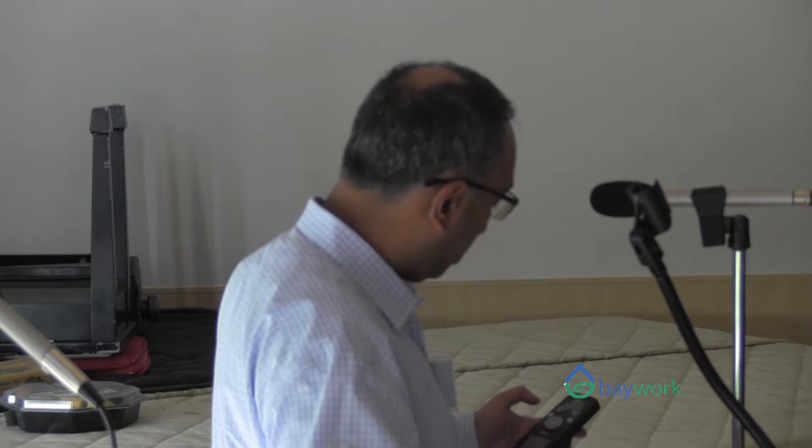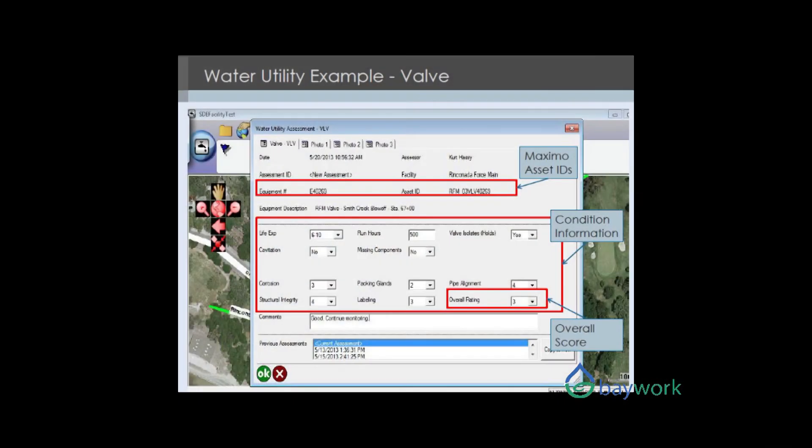This was implemented first for the watershed, and we brought that knowledge over onto water utility. When you go through and do the inspection, the asset type comes up here and there will be a specific form for that. Then you have photos which you can take in the field using that device or using a separate camera, and then you can Bluetooth the photo into this device.